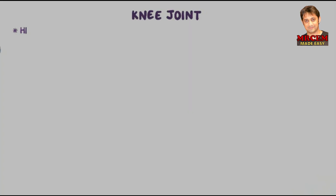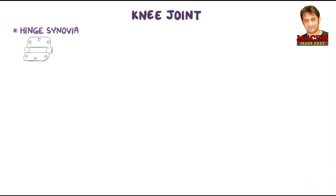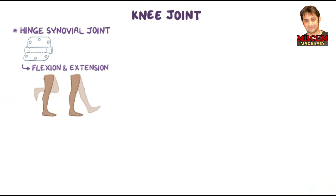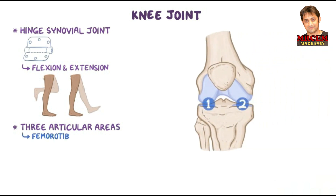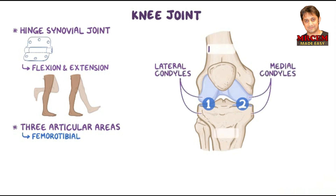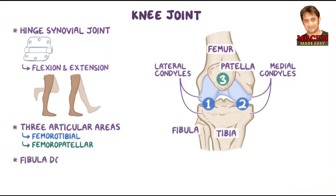The knee joint is a large hinge-type synovial joint allowing flexion and extension of the lower limb. The knee joint has three main articular areas: the lateral and medial femorotibial articulations between the lateral and medial condyles of the femur and tibia, as well as the intermediate femoropatellar articulation between the patella and the femur. Notice that the fibula does not participate in the knee joint.